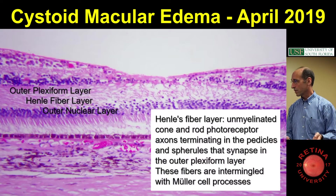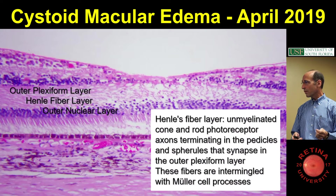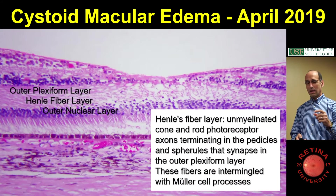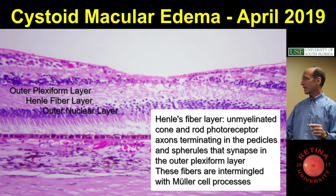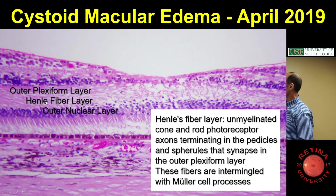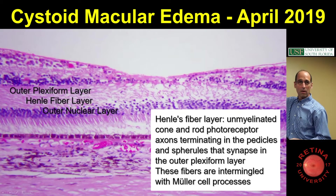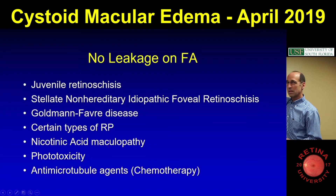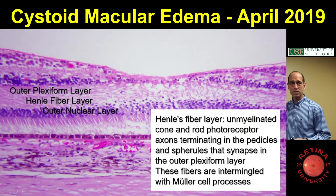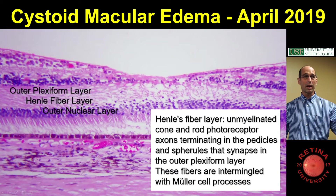And that's where you tend to get most of your macular edema. The retinal vessels straddle the internuclear layer — this area — but once you get out here, you actually don't have much vascularity, which is one of the reasons you get the accumulation of fluid here, because there's not much circulation to take it away.